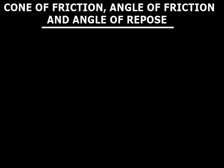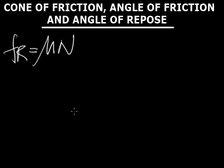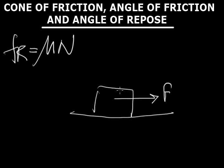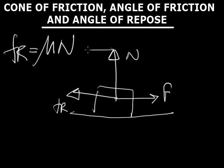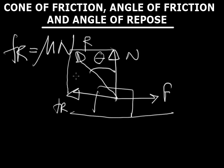We now come to cone of friction, angle of friction, and angle of repose. All these are used to measure the coefficient of friction mu. To measure mu, we apply a force on a body; FR is the friction force and N is the normal reaction. We take the resultant R of these two forces, and the angle theta between the normal reaction and this resultant is the angle of friction.